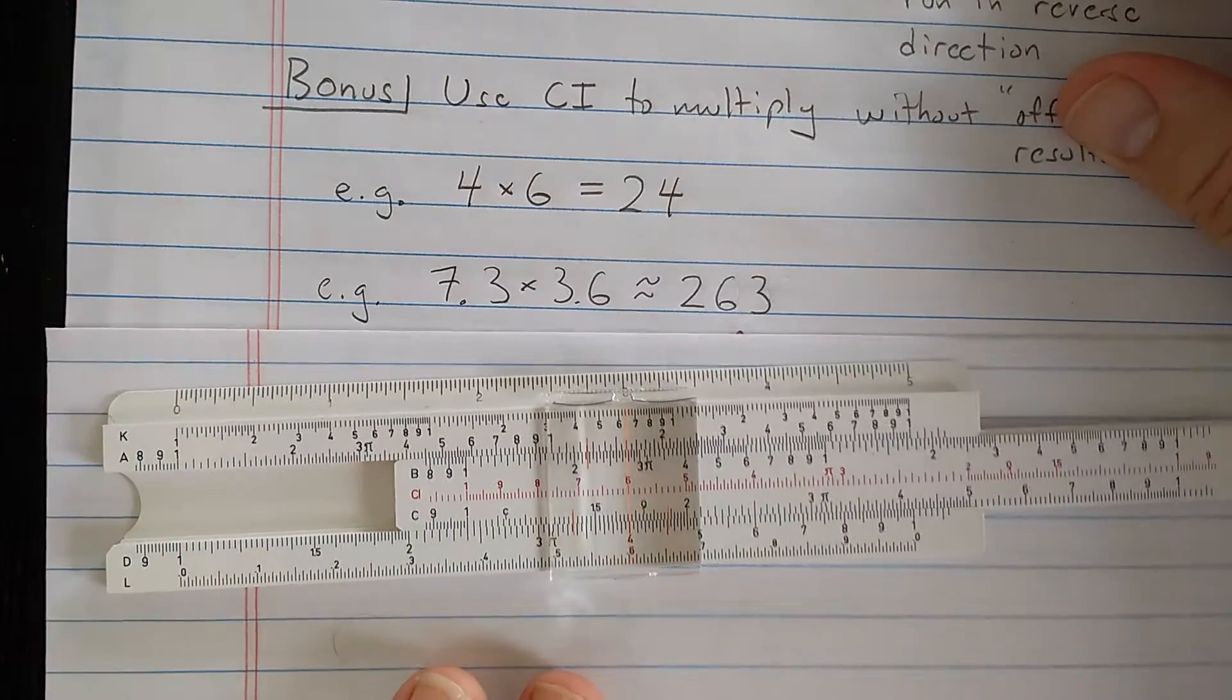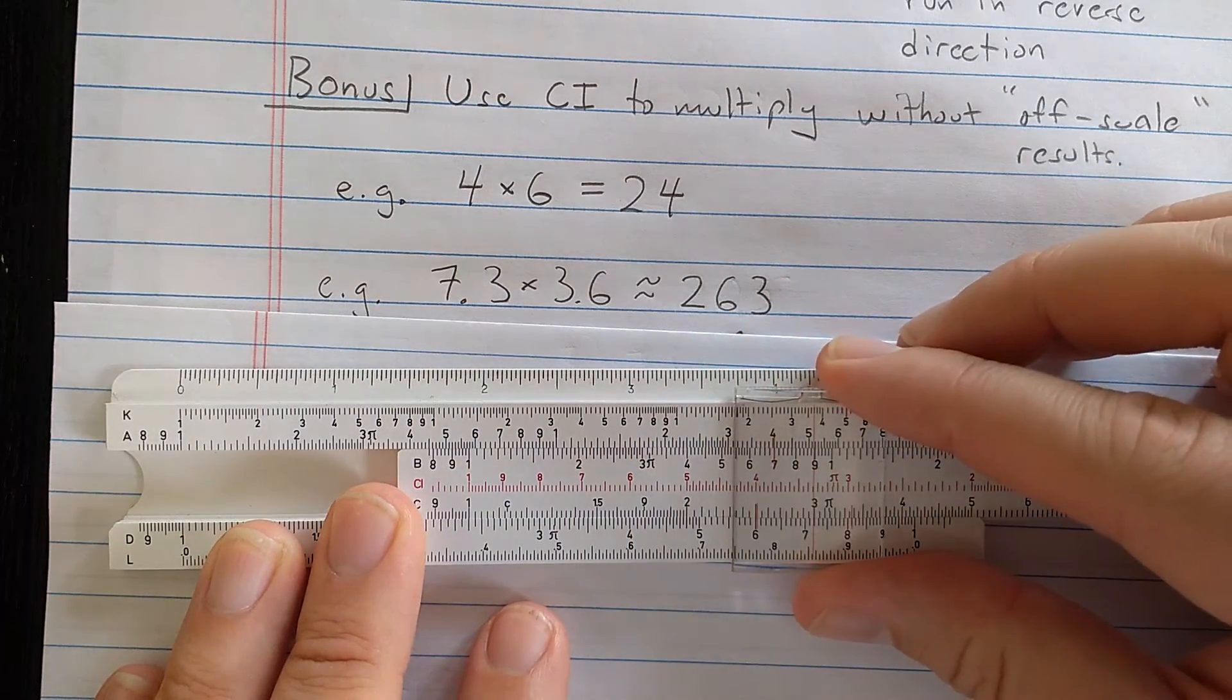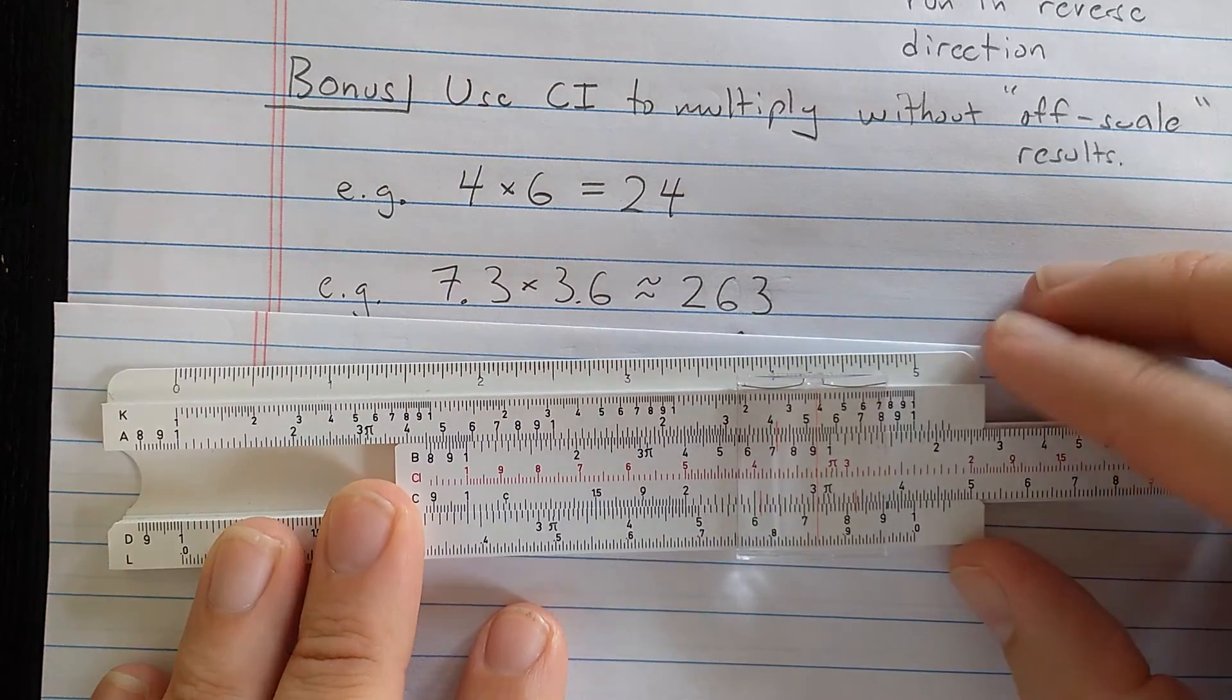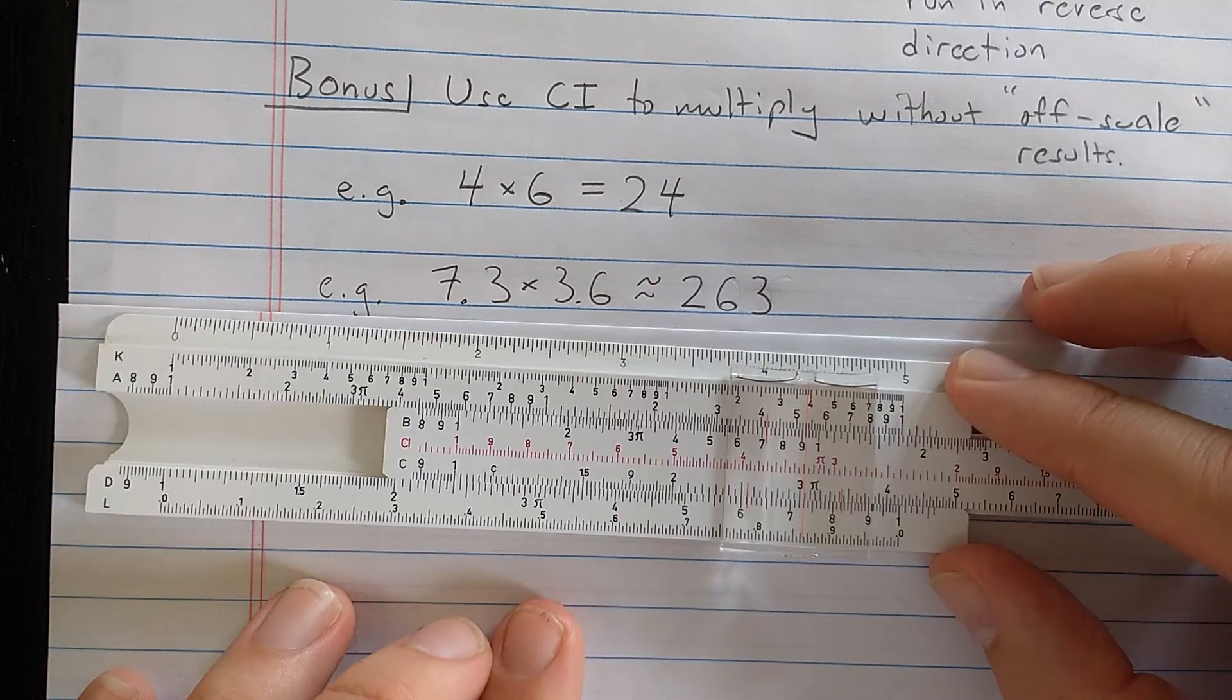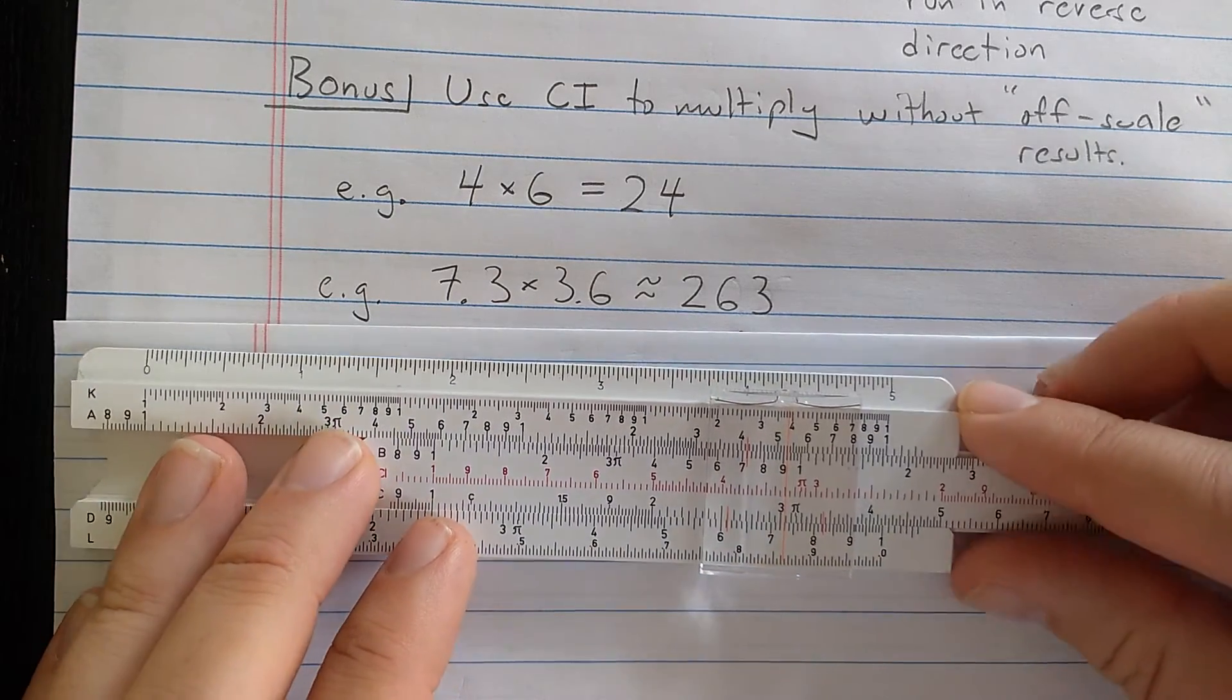So let's practice this. So if I find 7.3, I want to do a multiplication and I want to be sure that I'm not going to go off scale and have to reset the slide. So I set 7.3 there,